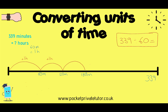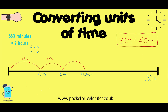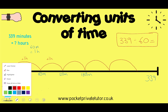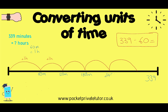Counting on in jumps: 240, 300. From 300, if I did another jump it would reach 360 — that's too far. So I can't fit another one of those jumps in. The furthest I can get is 240 and 300 minutes. You'll see I'm using my 60 times tables — the divisor tells you which times tables you're working with.